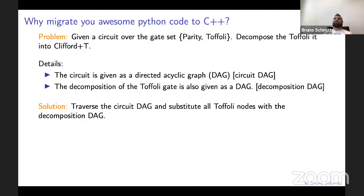Imagine that I have the following problem. I'm given a circuit over the gate set parity and Toffoli, the ones that I've seen in slides before, and I want to decompose the Toffoli into Clifford plus T. Some details: the circuits are given as DAGs and my decomposition of the Toffoli gate is also given as a DAG. The solution for this problem is I traverse the DAG, the circuit DAG, and substitute all Toffoli nodes with the decomposition DAG. You're just kind of unrolling one DAG into another.